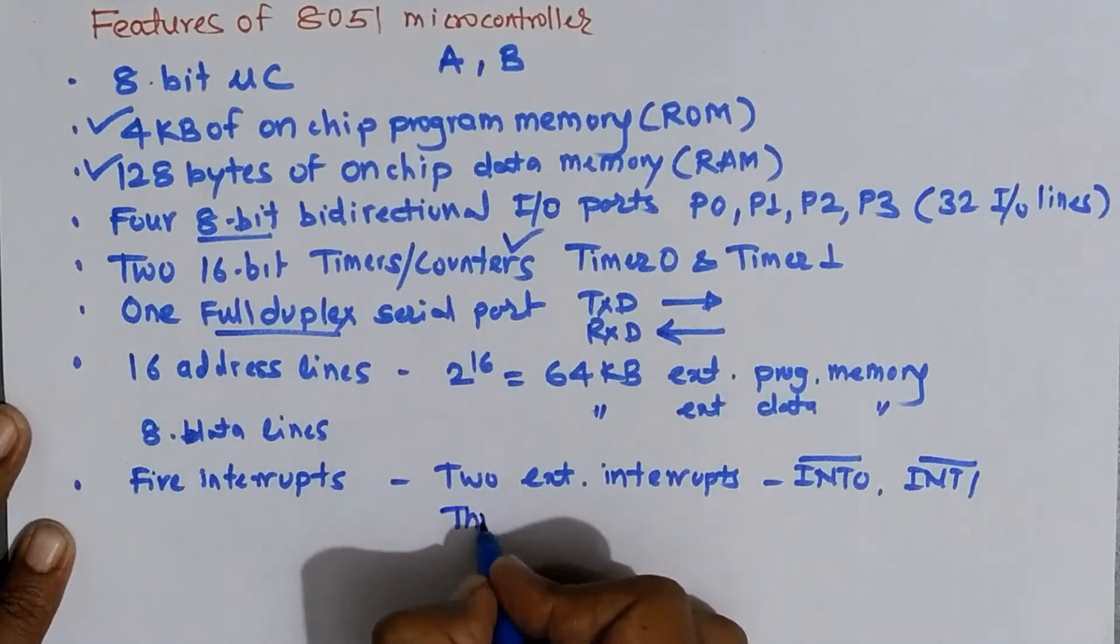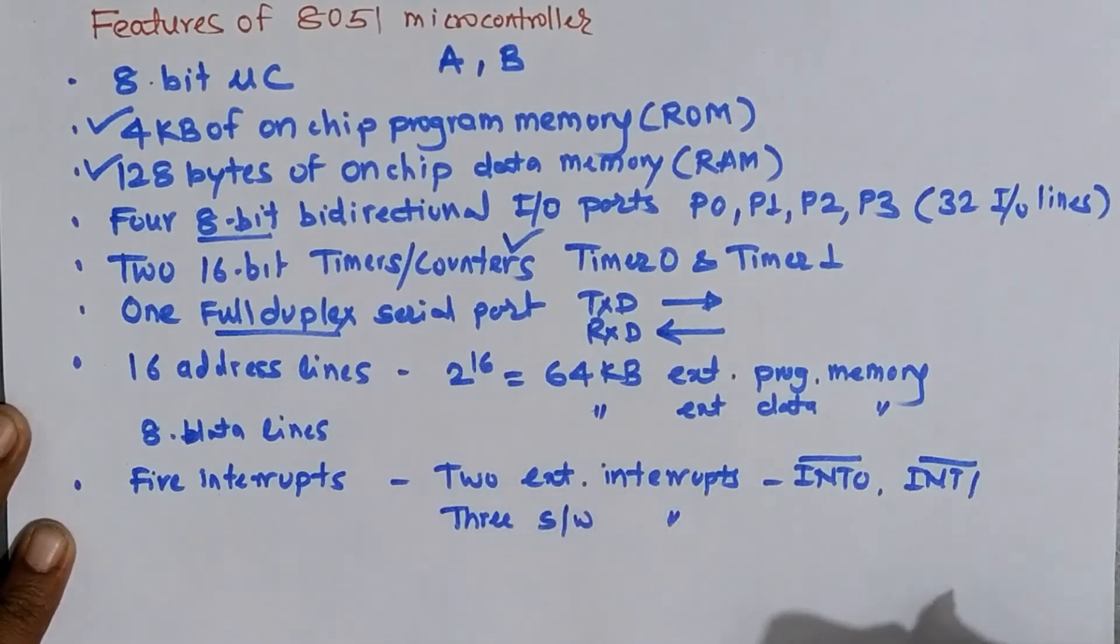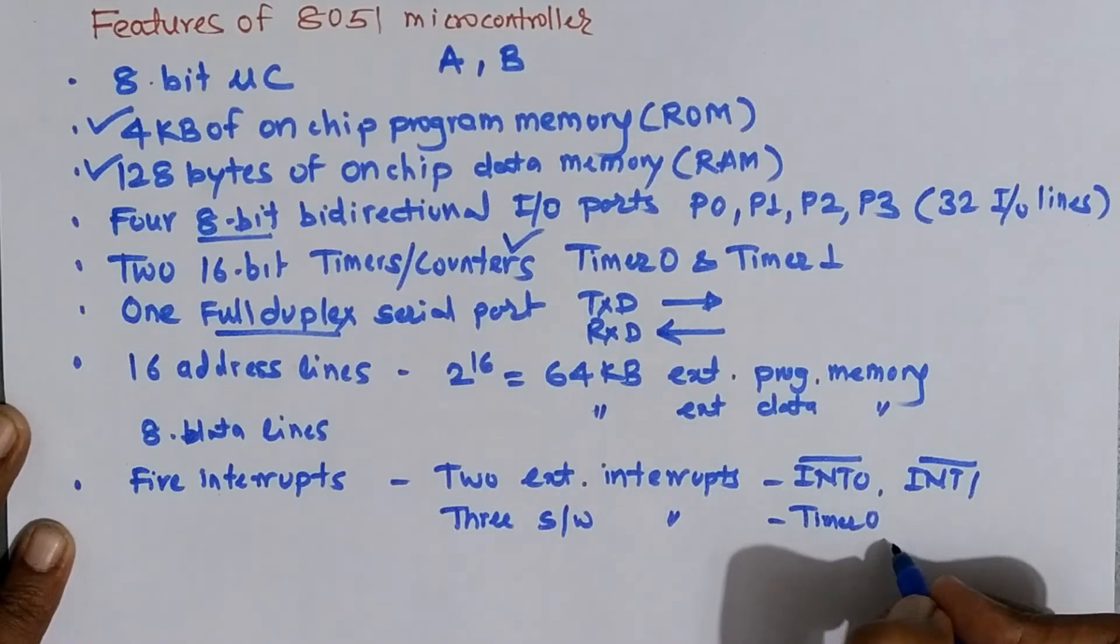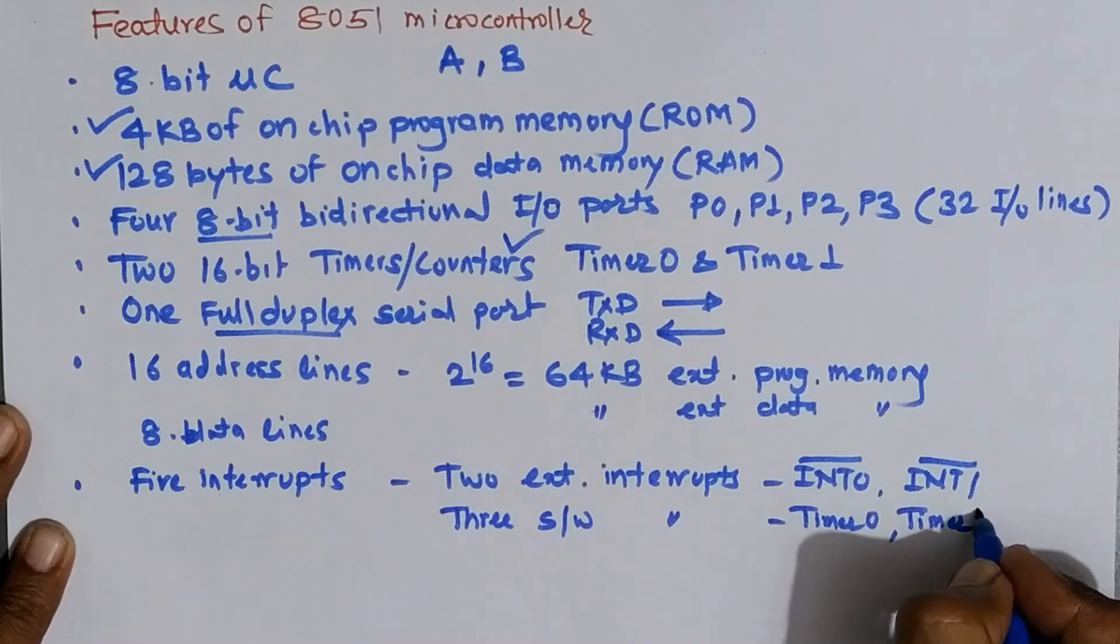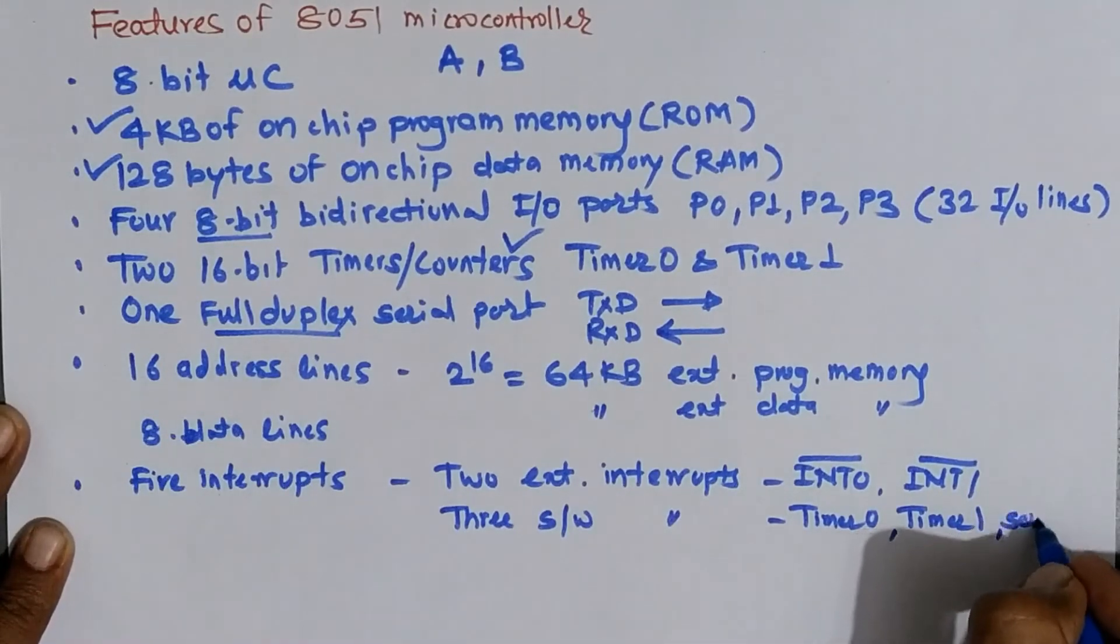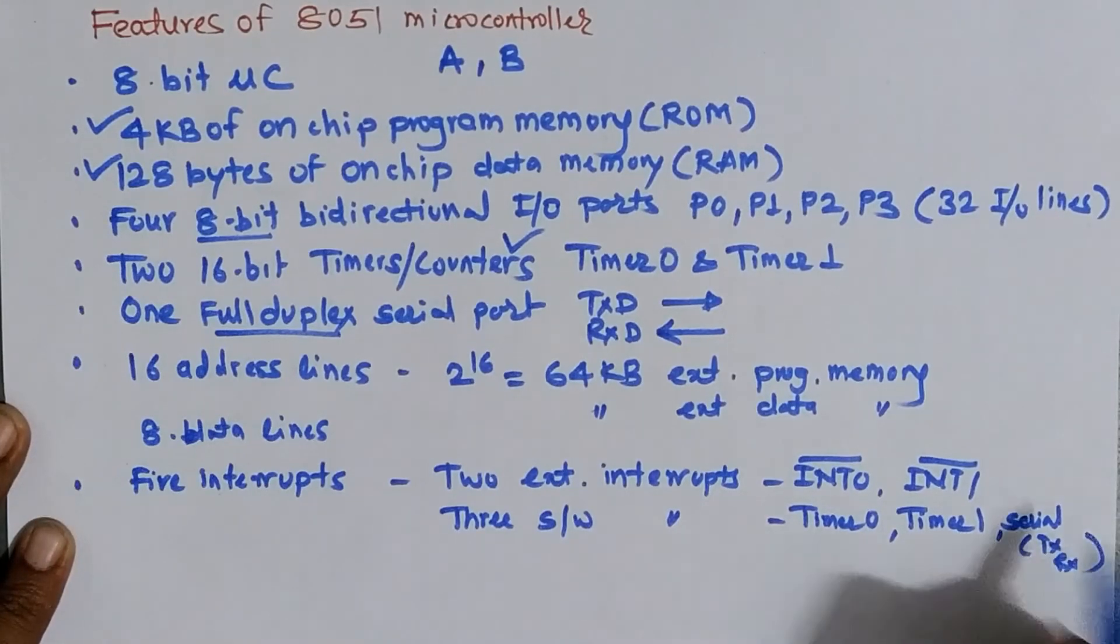Remaining 3 interrupts are internal interrupts and they are also called as software interrupts. So which are those 3 interrupts? One interrupt is related to timer 0. When timer gets overflowed microcontroller gets interrupted. Same is the case with another timer. Next interrupt is timer 1 related interrupt. When timer 1 overflows microcontroller gets interrupted. And another interrupt is serial interrupt which is related to transmission as well as reception. For transmission and reception one common interrupt is given which is called as serial interrupt. So in this way there are 5 different interrupts in microcontroller 8051.